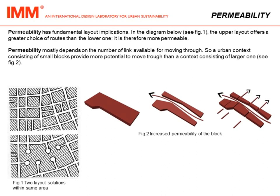Permeability mostly depends on the number of links available for moving through. An urban context consisting of small blocks provides more potential to move through than a context consisting of larger ones. In the example of the block shown, the more we cut it, the more permeable it becomes.